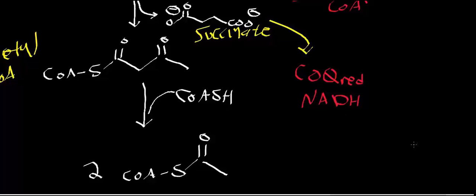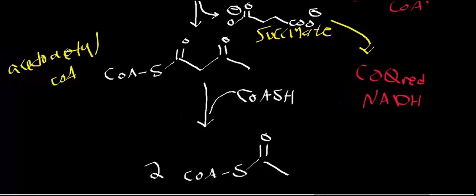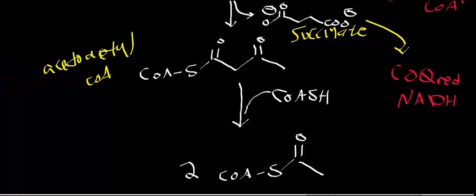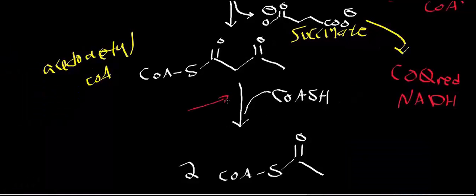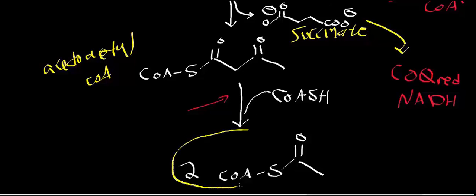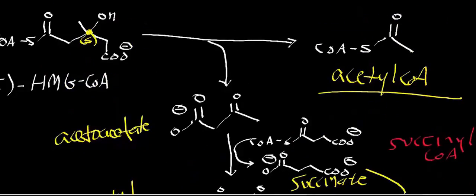Now we have acetoacetyl-CoA. This is going to react with thiolase, which is going to split acetoacetyl-CoA into two acetyl-CoAs. So let's see what our overall yield is for this reaction sequence.